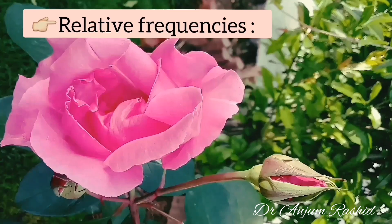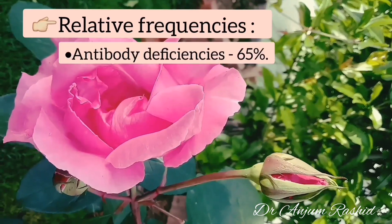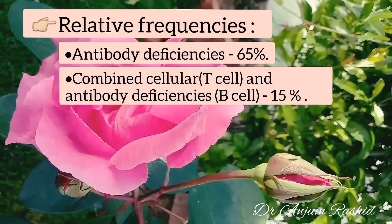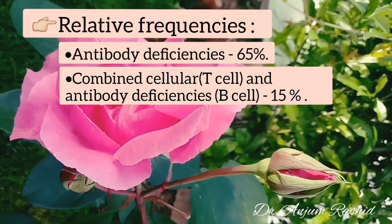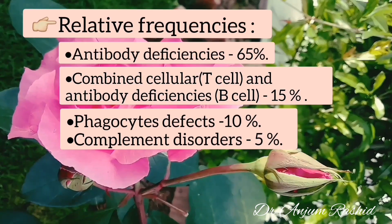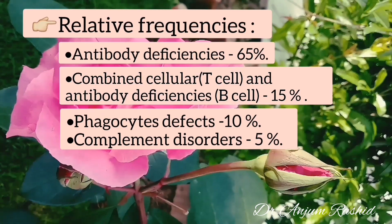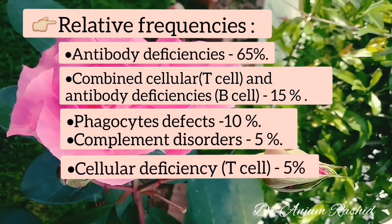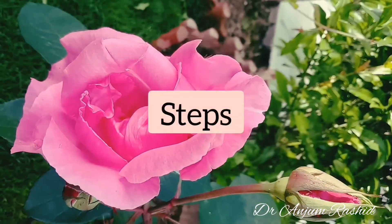The relative frequencies of these types are: antibody deficiency is the most common, responsible for 65% of cases; combined deficiency accounts for 15%; phagocytic defect for 10%; complement disorders for 5%; and T cell deficiency for 5% of cases.